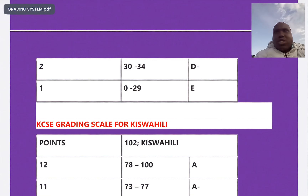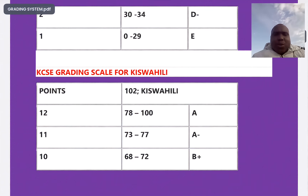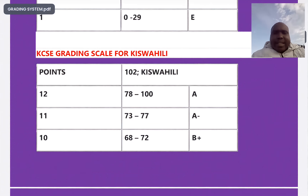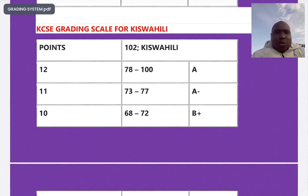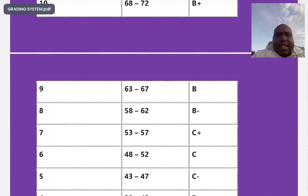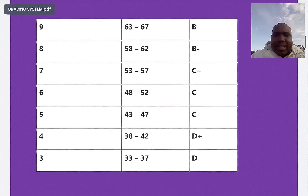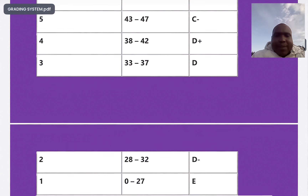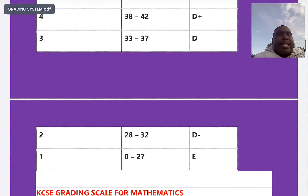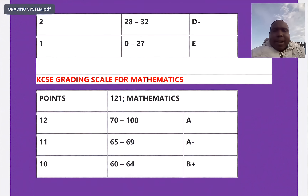Sign language, French, and other languages are treated the same as English in the grading system. For Kiswahili, A begins at 78 to 100, A minus 73 to 77, B plus 68 to 72, B plain 63 to 67, B minus 58 to 62, C plus 53 to 57, C minus 43 to 47, D plus 33 to 37, D plain 28 to 32, D minus, and 0 to 27 is an E.